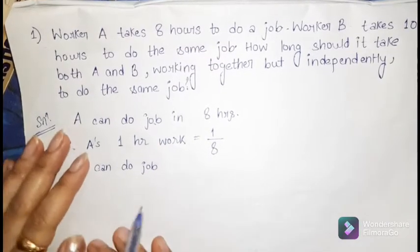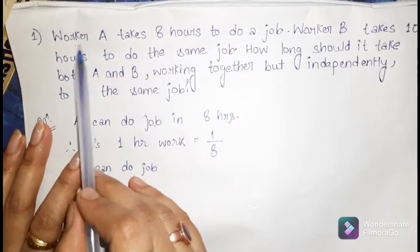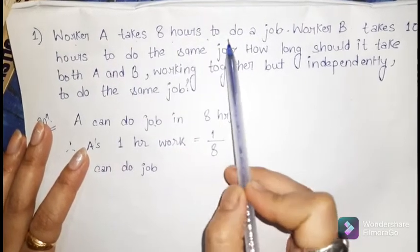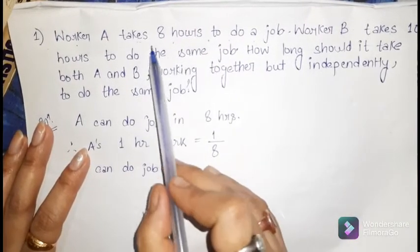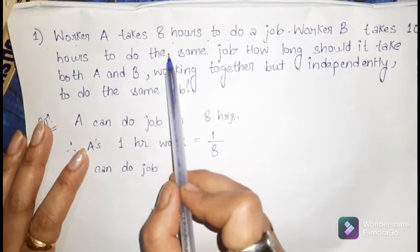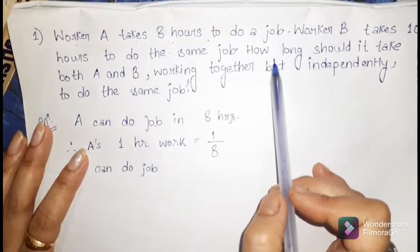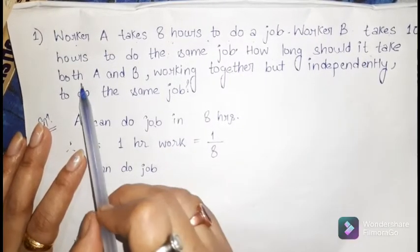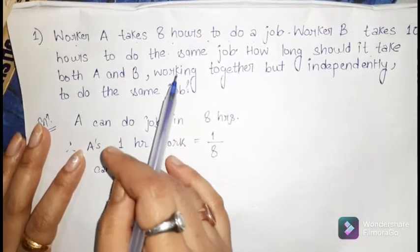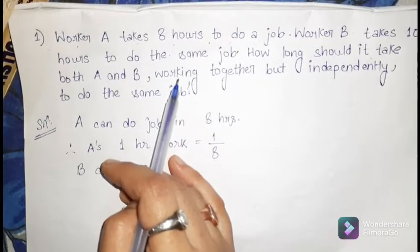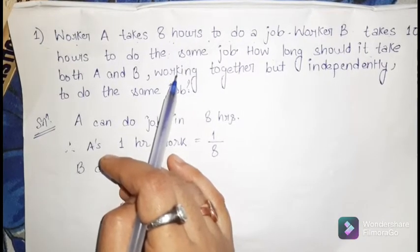Now we will do some problems related to time and work. The first question: Worker A takes 8 hours to do a job, worker B takes 10 hours to do the same job. How long should it take both A and B working together but independently to do the same job?